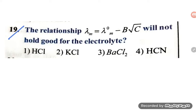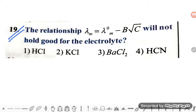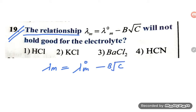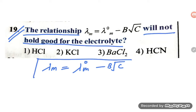Hello students, let us see problem number 19 from electrochemistry. The relationship given is λm = λm° - b√c. This equation will not hold good for all electrolytes, so this is the equation we have to study.